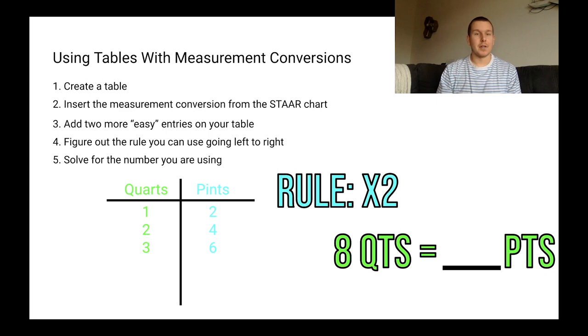Step five, solve for the number that you're using. So if the rule is we're going to be multiplying by two for eight quarts, that would be 16 pints. Eight times two gives us 16. So our answer would be there are 16 pints in eight quarts. Again, I know a lot of you guys were probably screaming the answer from the very beginning. This is a very easy example of how to do this, but there are some times where the table will be even more useful for numbers that are a little bit trickier to use. Let's go ahead and practice a couple problems together.